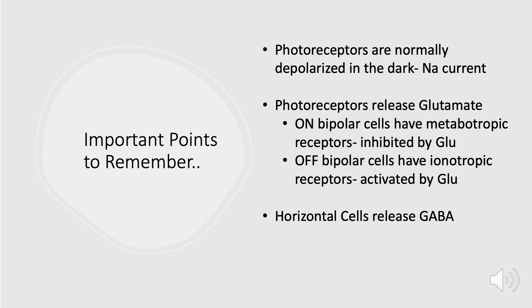The last thing to keep in mind is that horizontal cells release GABA, which is notably an inhibitory molecule.